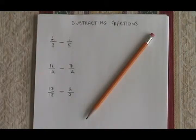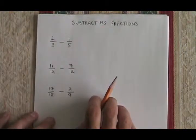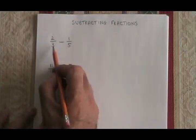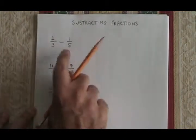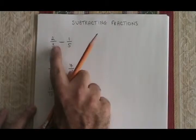Subtracting fractions works the same as adding fractions, but let's go through its rules right from the beginning. If we want to subtract 2 thirds minus 1 fifth, we have to have a common denominator. So we need to know the multiples of 3 and 5.